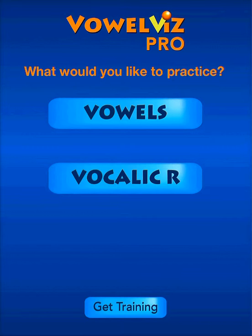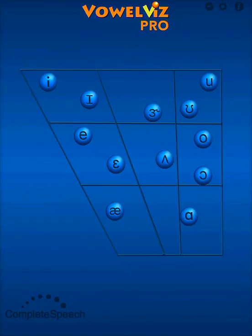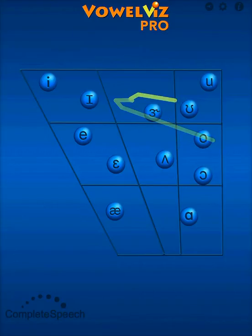If you are an experienced Valviz user, the first difference you'll notice in Valviz Pro is that when you open the app, the landing screen is different. Now you have the option to practice vowel quality and another option to focus on Vocalic R. When I press the vowels button, the app takes me to traditional Valviz, and here I can track my vowel quality and see the visual feedback.